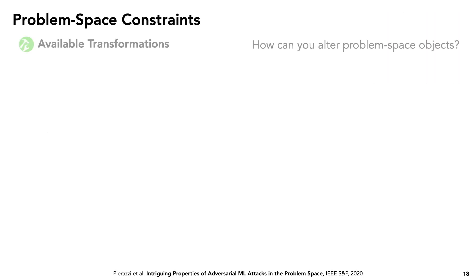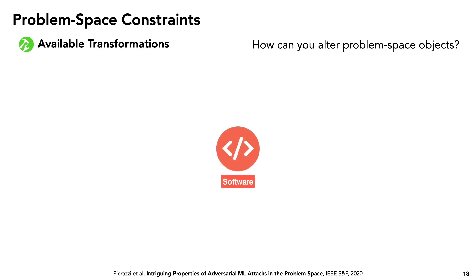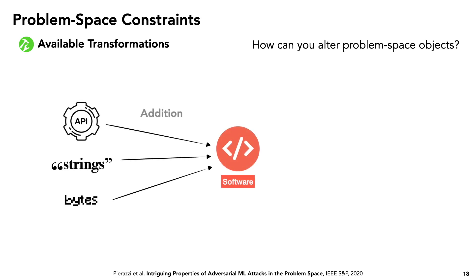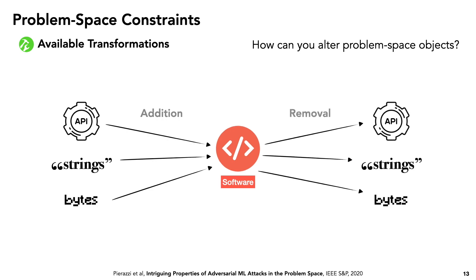Let's move on to the formalization, starting with general problem space constraints. First, we need to define which real-world transformations we can perform to automatically alter the problem space objects — these transformations correspond to perturbations in the feature space. In the code setting, we can perform addition, like adding API calls, strings, or bytes, and similarly we can remove those things, although removal might impact the functionality of the code, so we need other constraints to handle that. We can also perform modification by combining addition and removal.